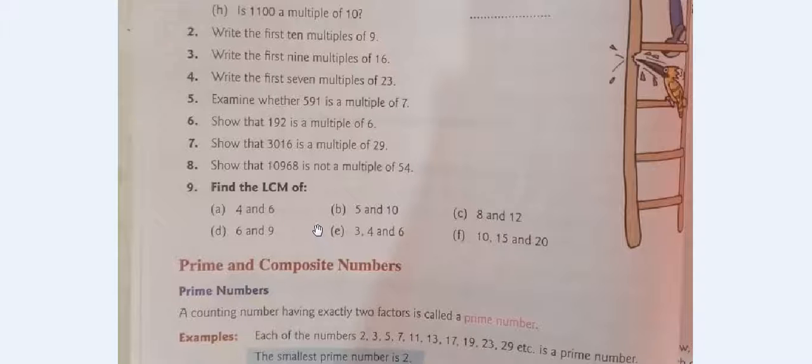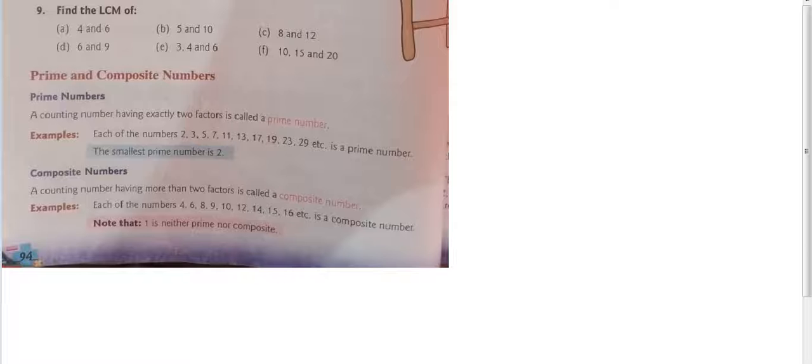We will find the least common multiple or lowest common multiple. We will write the multiples and find the smallest one that is common. Let me show you the process. The numbers are 4 and 6.